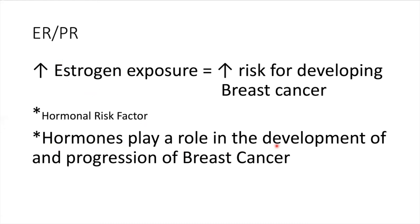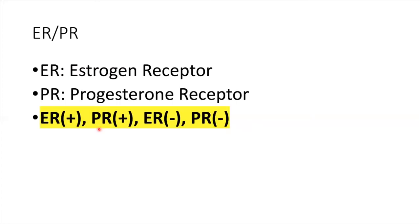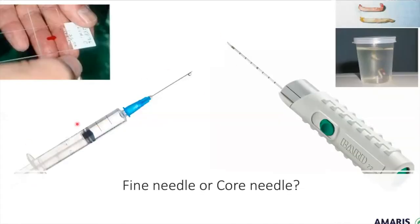Hormones play a role in the development and progression of breast cancer. How do we know if a patient has ER or PR on the cells? That's when we take samples, which can be obtained by biopsy using a fine needle or a core needle. A fine needle has a small gauge so the sample is small, aspirating only small amounts. A core needle has a larger bore, meaning it can take larger specimens.